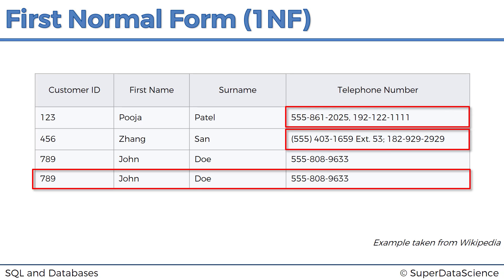So indeed, this is a valid table — you could come across a table like this. But at the same time, if the person that created this table wanted to structure it in first normal form, they wouldn't have these issues. So the answer to the question is no, it doesn't conform. And the question is now, how could we fix this table to make it conform to the first normal form — to meet that criteria?